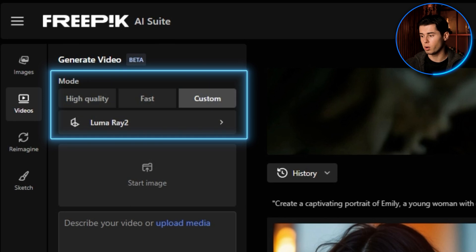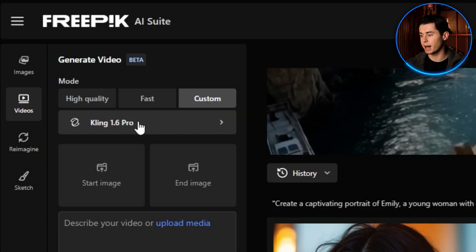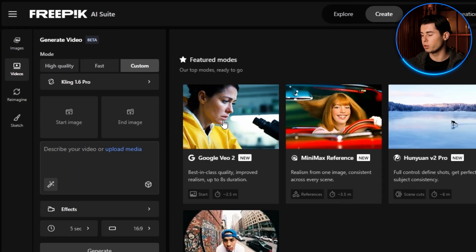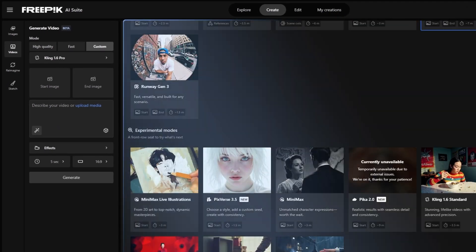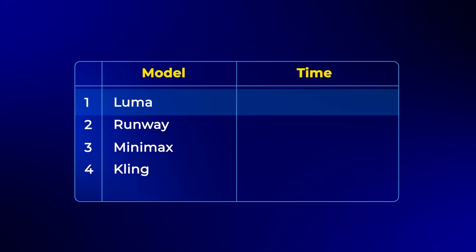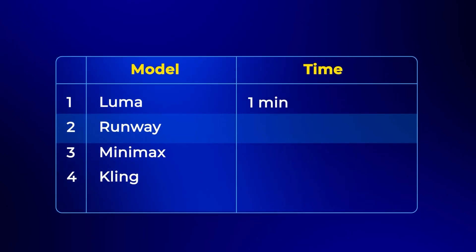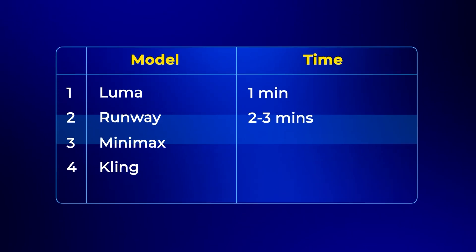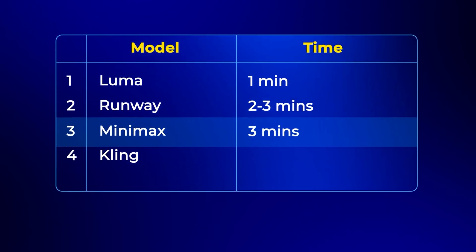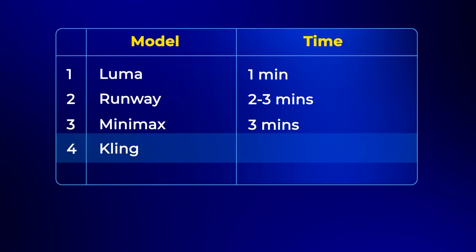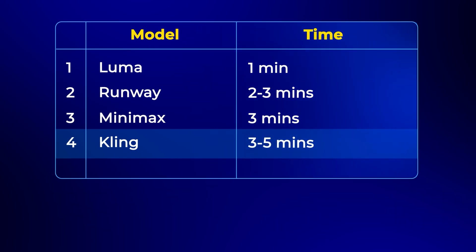Next, you'll see the mode section where you can select which AI model you want to use. By default, it's set to Luma since that's the fastest, but you can choose between several options. Luma takes about one minute to generate, making it the fastest option. Runway takes around 2 to 3 minutes. Minimax takes around 3 minutes, and Kling takes around 3 to 5 minutes.